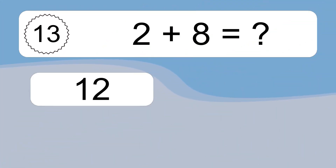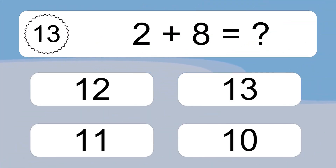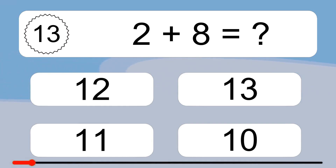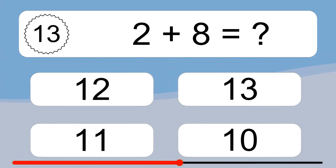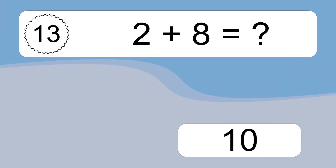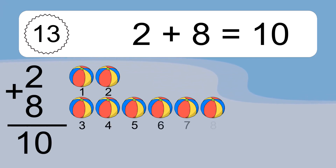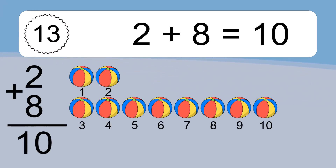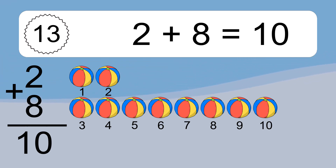2 plus 8 equals what? 2 plus 8 equals 10. Let's count it. 1, 2, 3, 4, 5, 6, 7, 8, 9, 10.